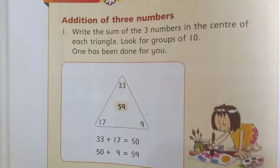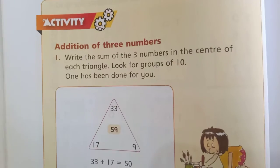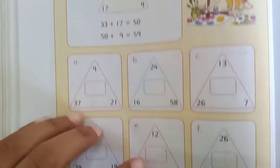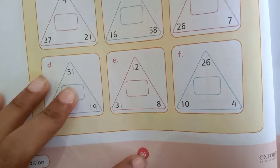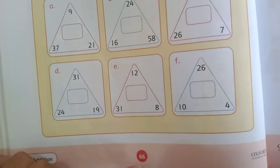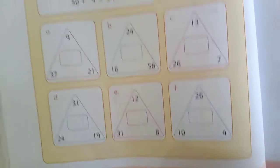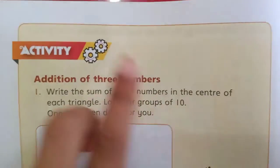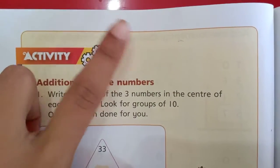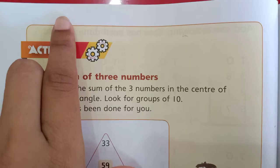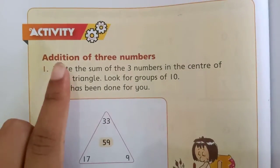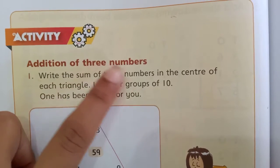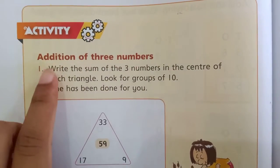Class 1, today we will complete activity page on our mass countdown book, page number 66. Open your book, open page number 66. First of all, write down date and homework. Write down today's date by yourself and mention homework: Addition of 3 numbers.